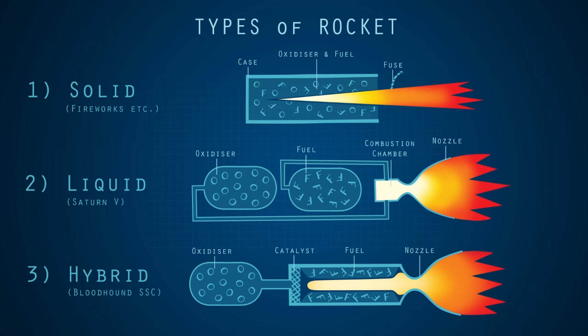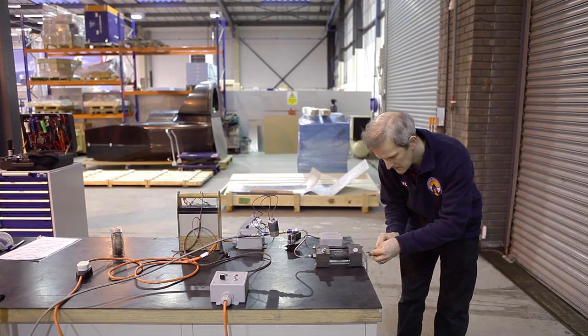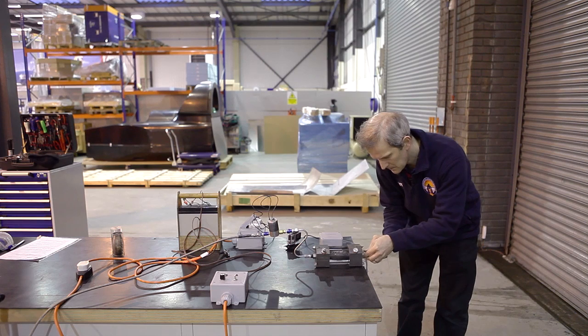It's a fairly safe system, as stopping the flow of oxidizer will stop the rocket, and the fuel is a harmless rubber mixture. Our resident rocket expert has built a small hybrid rocket which we can run in the workshop.